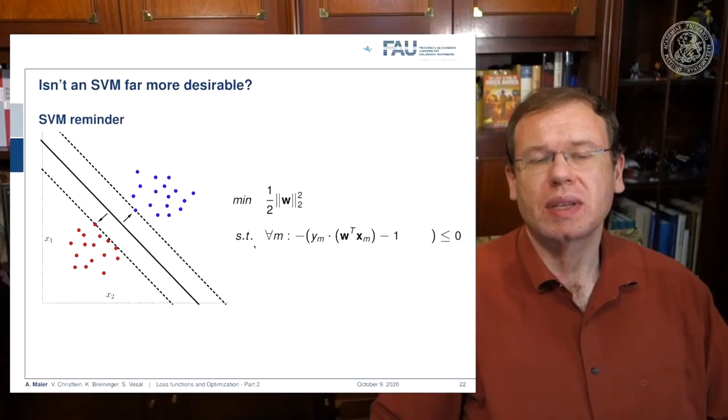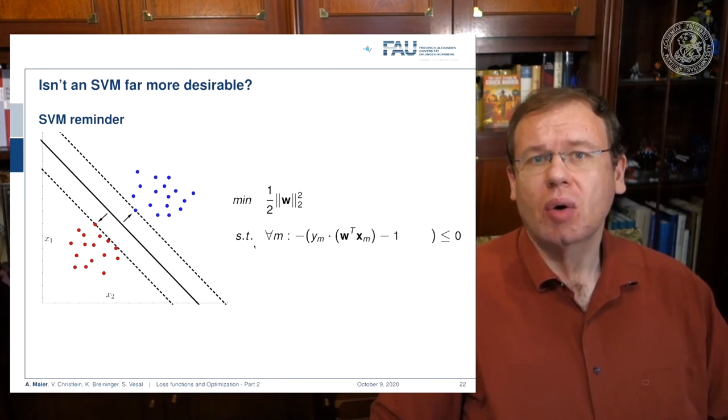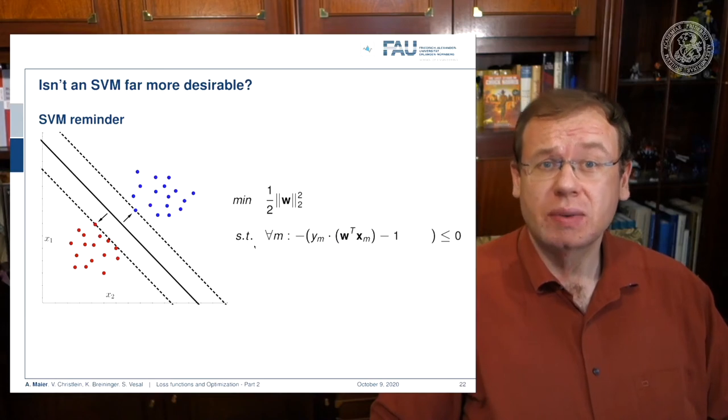What if people say, oh, support vector machines, SVMs, are much better than what you are doing because they always achieve the global minimum? So isn't it much better to use the SVM? Let's have a small look at what an SVM actually does.